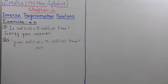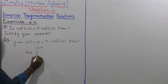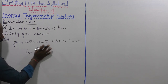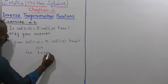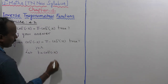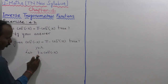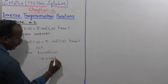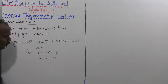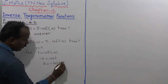Let us consider t is equal to cos inverse of minus x. So t equals cos inverse of minus x. Taking this to the right side, minus x is equal to cos t.